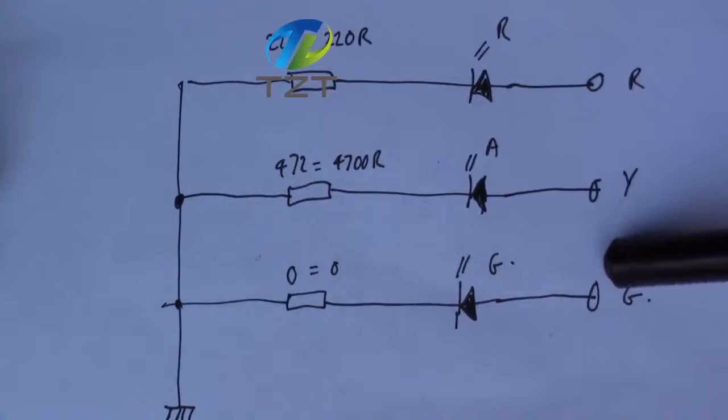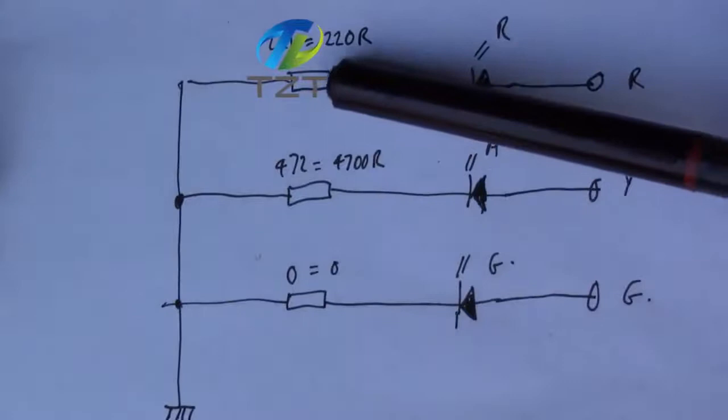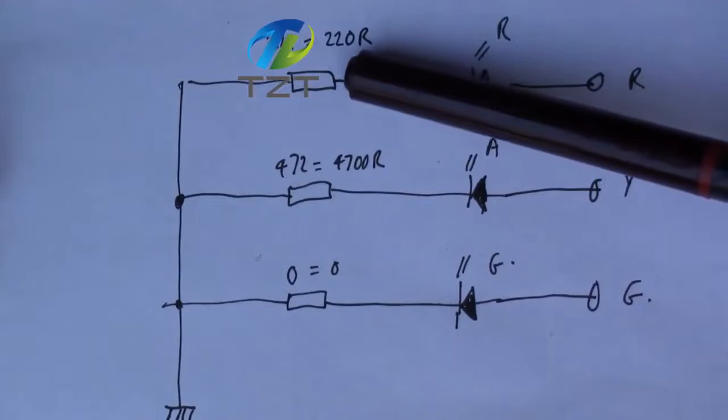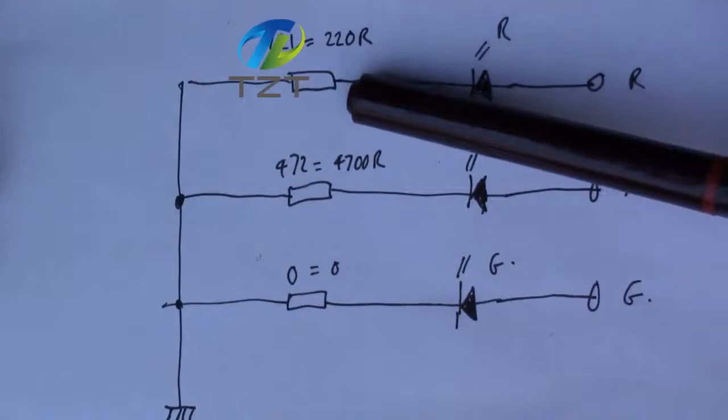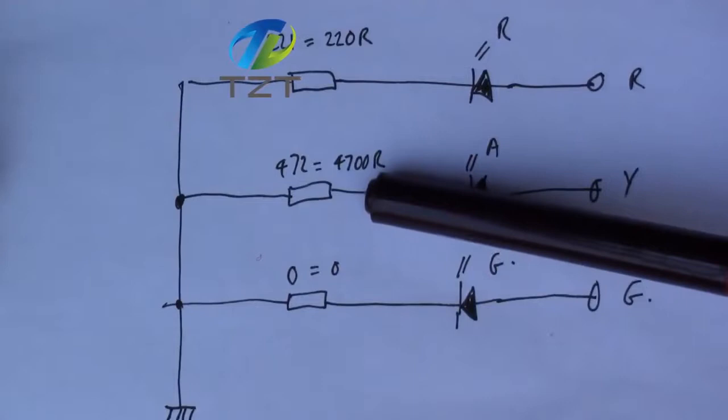These values are a bit strange because the one on the red, 220, that's a reasonable value for a current limiting resistor for an LED. But 4.7K is totally wrong, and zero is not good either because you don't really want to run an LED without a current limiting resistor.